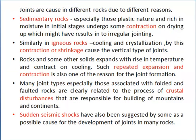Joints are found in all types of rocks but in each type, the reason for development is different. In sedimentary rocks, especially those which are plastic in nature and rich in moisture, irregular jointing develops due to contraction or drying up. In igneous rocks, formed by cooling and crystallization of magma, vertical joints develop due to shrinkage during cooling. Sometimes repeated expansion and contraction due to temperature variation also results in joints. Many joint types are related to crustal disturbances, and sudden seismic shocks also cause development of joints.